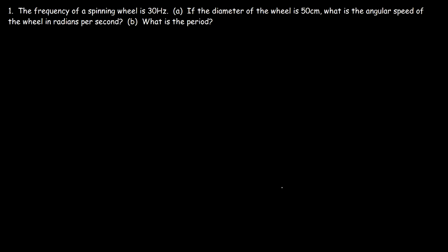In this tutorial, we're going to go over physics problems associated with angular speed and angular velocity. So let's start with this one. The frequency of a spinning wheel is 30 hertz. If the diameter of the wheel is 50 centimeters, what is the angular speed of the wheel in radians per second?